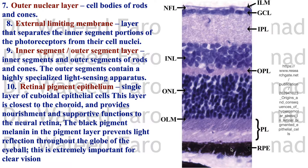In retinal detachment, the retinal pigment epithelium remains fixed to the choroid and all the other nine layers are detached. This layer provides nourishment and supportive functions to the retina. The black pigment melanin prevents light reflection throughout the globe of the eyeball — similar to how the insides of cameras are always black to prevent light reflections, which is very important for clear vision.